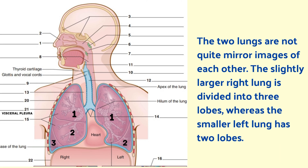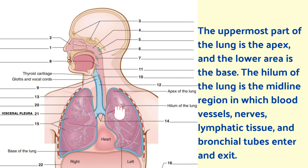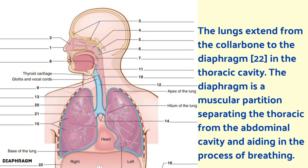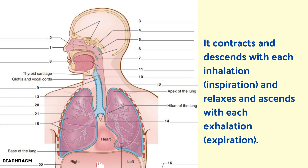The two lungs are not quite mirror images of each other. The slightly larger right lung is divided into three lobes, whereas the smaller left lung has two lobes. The uppermost part of the lung is the apex and the lower area is the base. The hilum of the lung is the midline region in which blood vessels, nerves, lymphatic tissue and bronchial tubes enter and exit. The lungs extend from the collarbone to the diaphragm in the thoracic cavity. The diaphragm is a muscular partition separating the thoracic from the abdominal cavity, aiding in the process of breathing. It contracts and descends with each inhalation and relaxes and ascends with each exhalation.